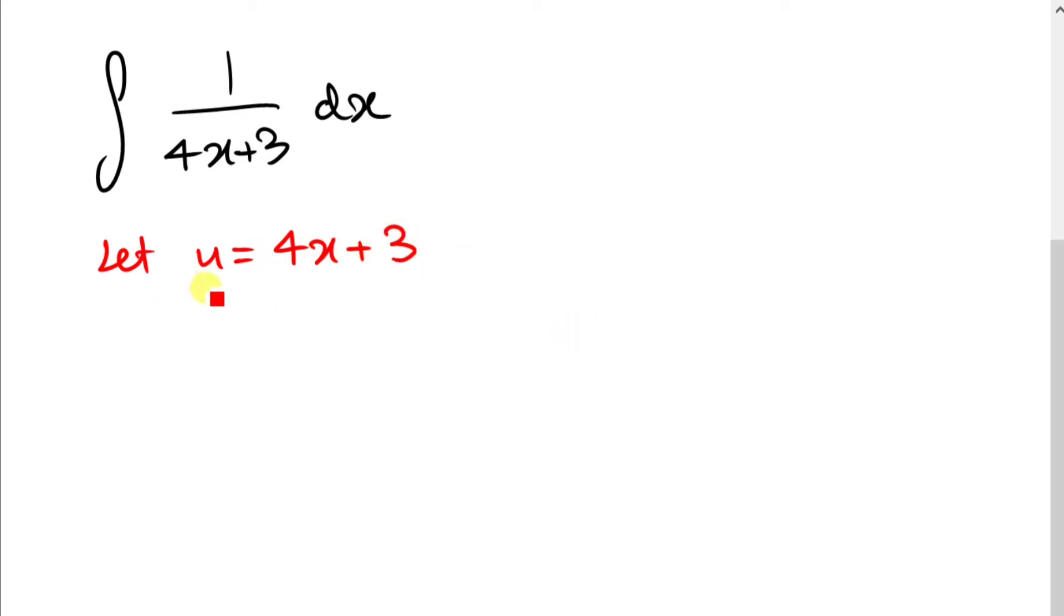And the next thing you want to do is just differentiate this. So we're going to have du over dx and it's just going to be 4.